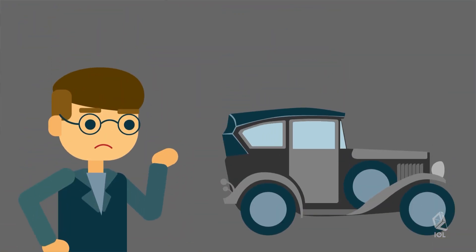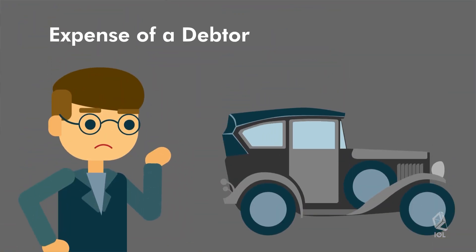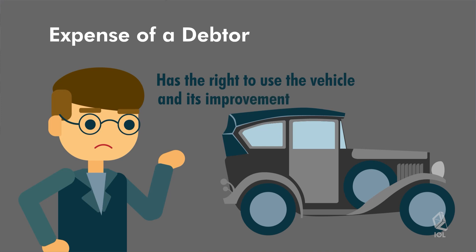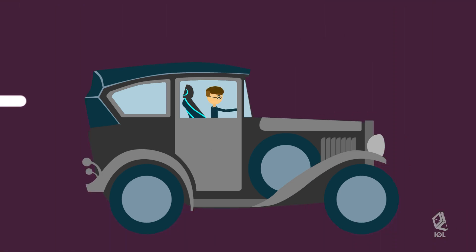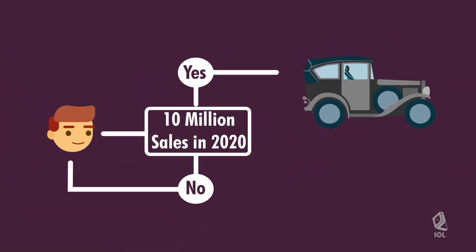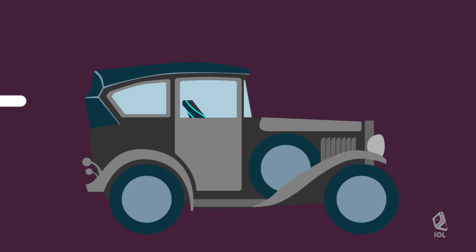However, if the improvement is at the expense of the debtor, then the debtor has the right to use the thing and its improvement until the happening of the condition. For example, Antin had the car reconditioned and its car seats upholstered. Then Antin has the right to use the car and its improvement until the fulfillment of the condition. He may also remove the improvement if it will not cause damage to the car. But if the removal shall cause damage, then Antin shall deliver the car to Henry with the improvements without the right for indemnity.